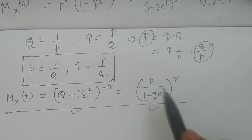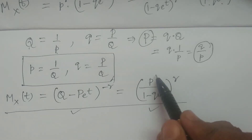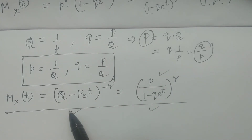Please remember and study these two particular forms. The first form is [p / (1 − q e to the power t)] to the power r, and the second form is (Q − P e to the power t) to the power (−r). We can use either form. Thank you very much.